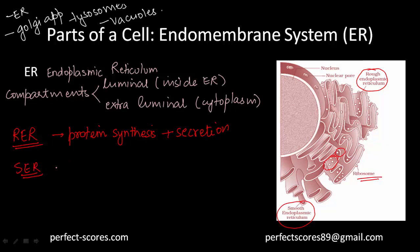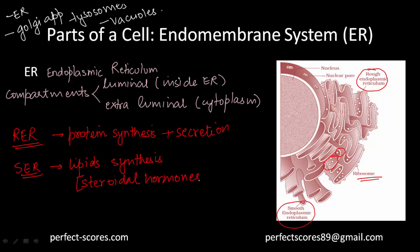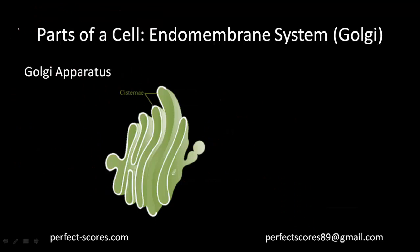The smooth endoplasmic reticulum is used for the synthesis of lipids, which are fat molecules. In animal cells, lipid-like hormones known as steroidal hormones are also produced in the smooth endoplasmic reticulum. That covers the ER, which is the first component of the endomembrane system.